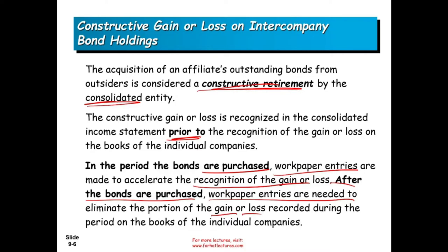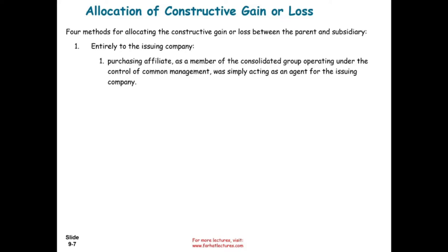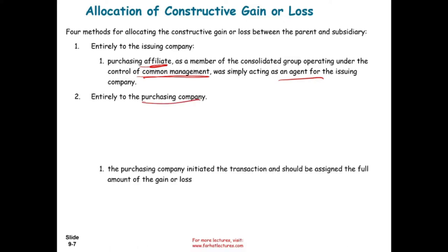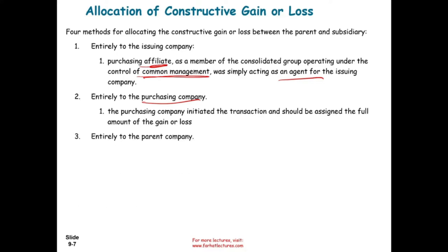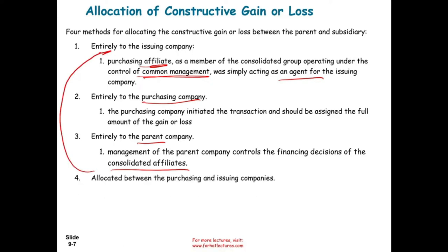How do we allocate the gain or the loss? There are four methods. One: allocated entirely to the issuing company — the purchasing affiliate is operating under common management control and is simply acting as an agent on behalf of the issuing company. Two: allocated entirely to the purchasing company — the company that initiated the transaction should absorb the gain or loss. Three: allocated entirely to the parent company — management of the parent company controlled the financing decisions of the consolidated affiliate. Four: allocated between the purchasing and the issuing company.